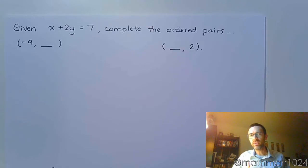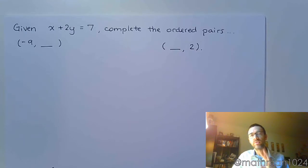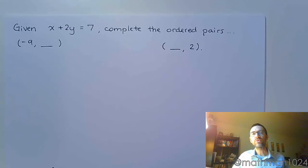In the past, we've been dealing with equations that only contain one variable. And now we have equations that contain two variables. And since you have two variables, that means that your solutions will take on the form of an ordered pair.